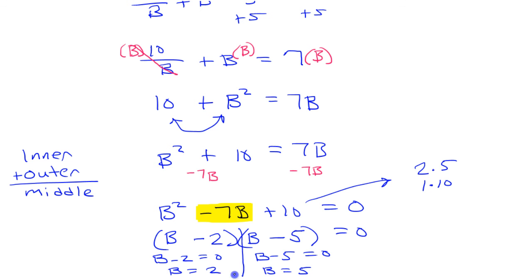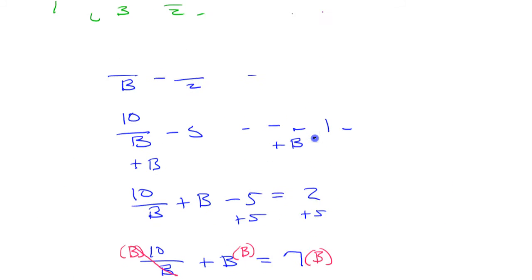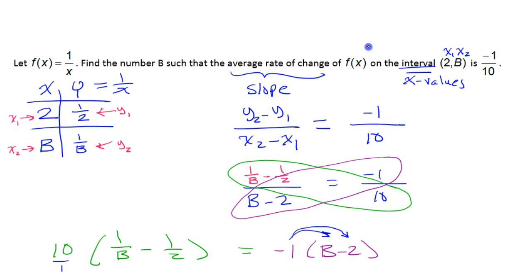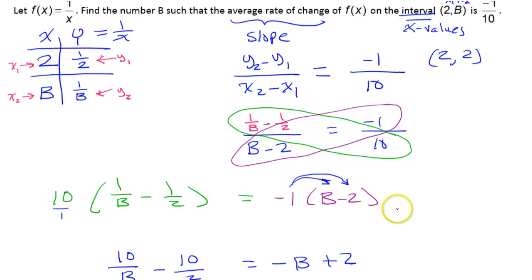Now, I'm thinking one of these is not going to make sense in the context of this problem. So remember we got the solutions 2 and 5. So b could either equal 2 or 5 to solve the equation that we came up with. But would it make sense, the interval from 2 to 2? If we started at 2 and ended at 2, then there wouldn't be any change between there. So it wouldn't make sense for that to be an average rate of change of negative 1 over 10. So it can't be 2. So we call that extraneous, because that one doesn't make sense. So the answer must be 5. But let's check it.